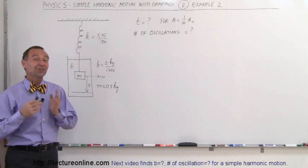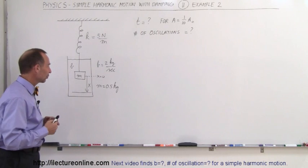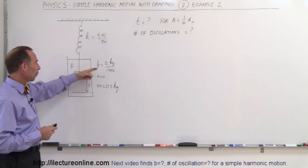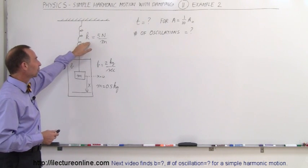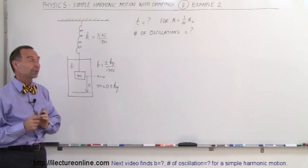Welcome to our Lecture Online, and here's our next example of oscillator motion with a damping factor. So here we have the same damping factors before, 2 kilograms per second, a spring with spring constant 5 newtons per meter, and a mass of 0.5 kilograms.